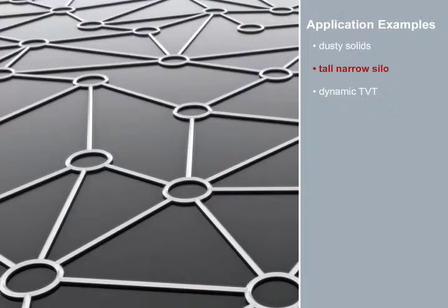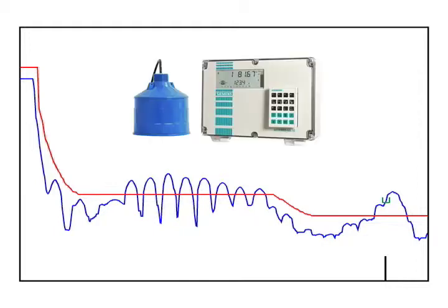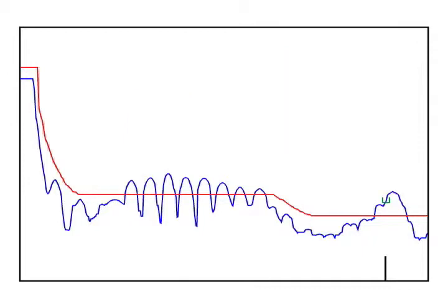Tall narrow silo. Here is an echo profile from another solids application. On this application, we are using a Siemens LU10 ultrasonic transceiver and an ECHO MAX XPS30 transducer. So what do you think of this echo profile? What could possibly be causing all of these echoes?